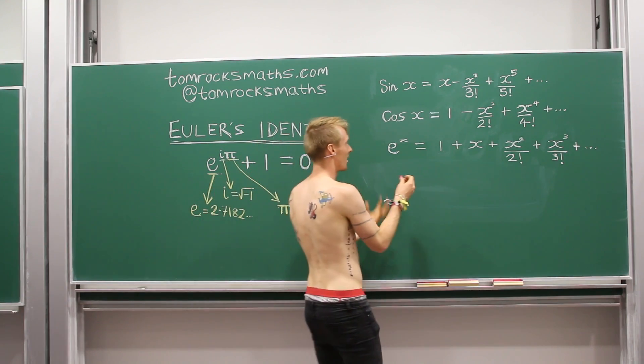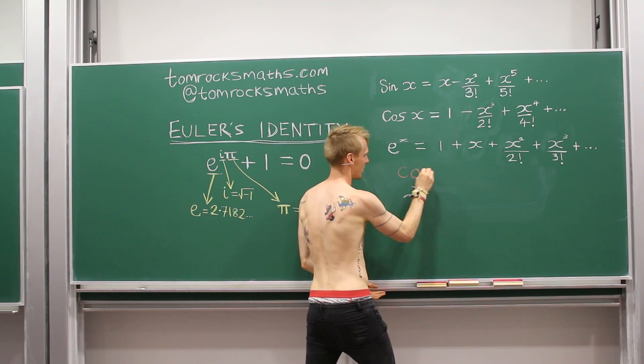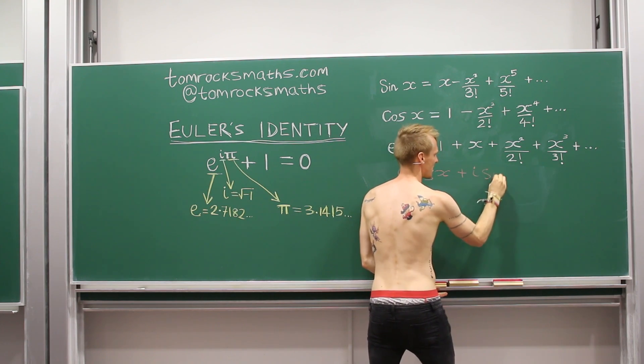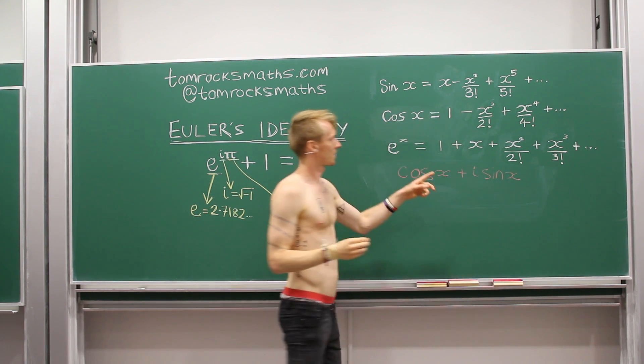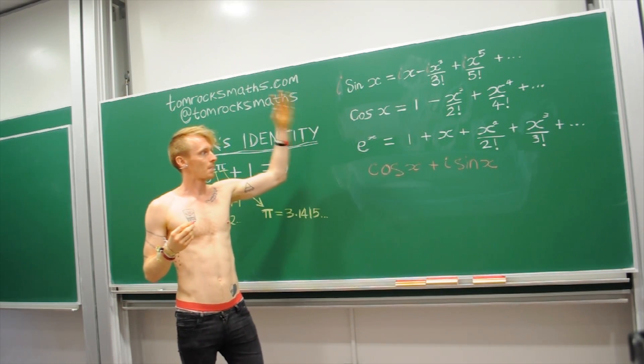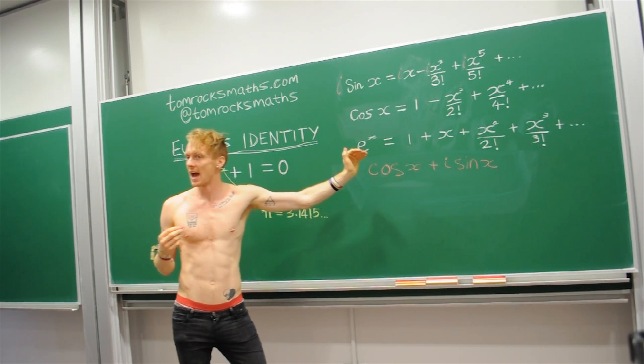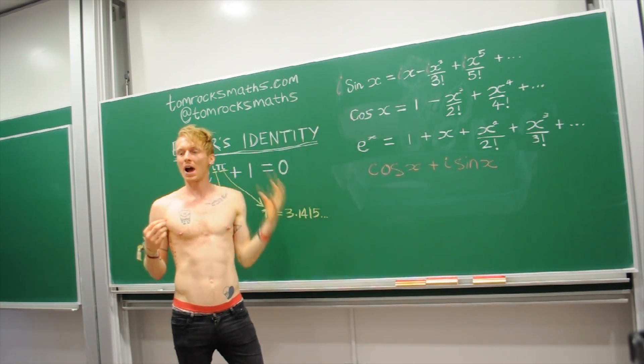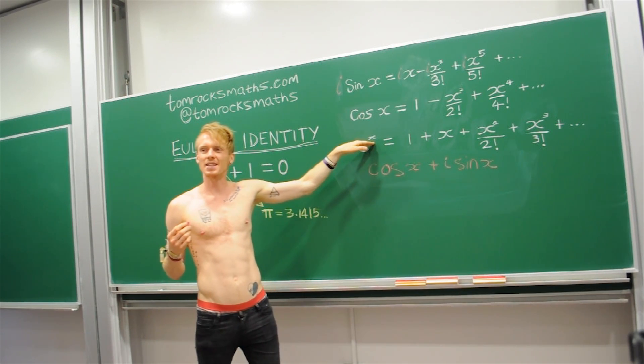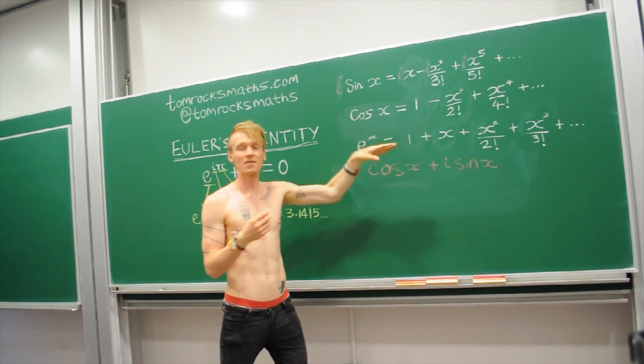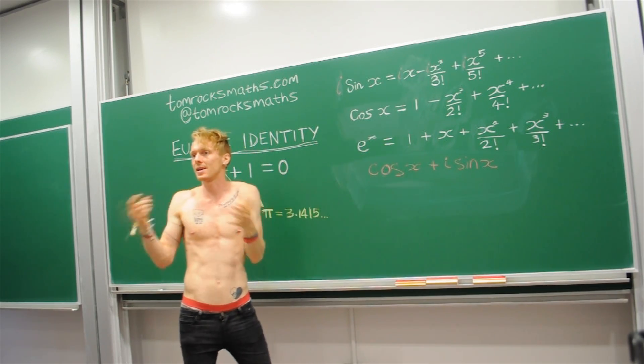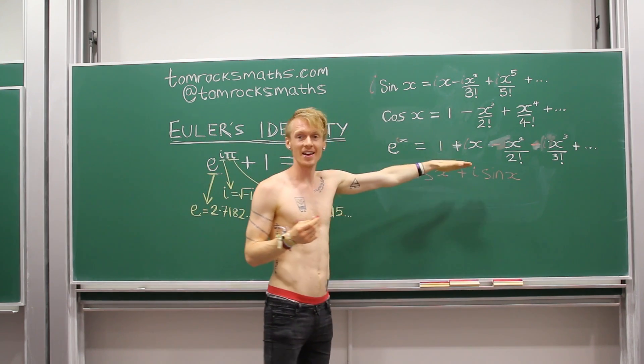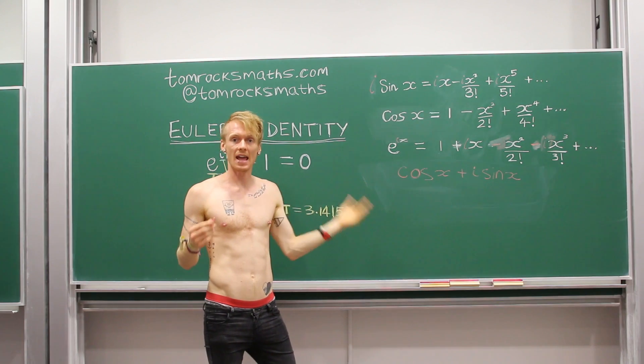So every time you have a minus sign you just need an i squared term in there, and this is what Euler spotted. So if you actually write these out as cosine of x plus i times sine of x, adding these two together, now you don't quite get e to the x because these are all pluses and these have got some minuses in it. But what happens is if instead of x you take this to be i x, so wherever there's an x just replace it with i times x, we can do that. And now if you add all these terms together, you get exactly e to the i x.